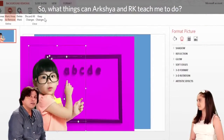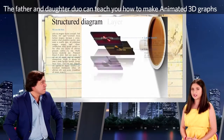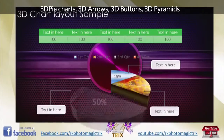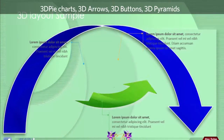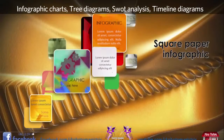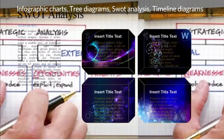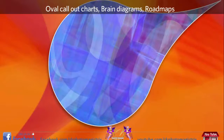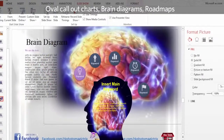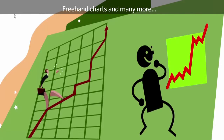So, what things can Arshir and RK teach me to do? The father and daughter duo can teach you how to make animated 3D graphs, 3D pie charts, 3D arrows, 3D buttons, 3D pyramids, infographic charts, tree diagrams, SWOT analysis, timeline diagrams, oval call-out charts, brain diagrams, road maps, freehand charts, and many more.